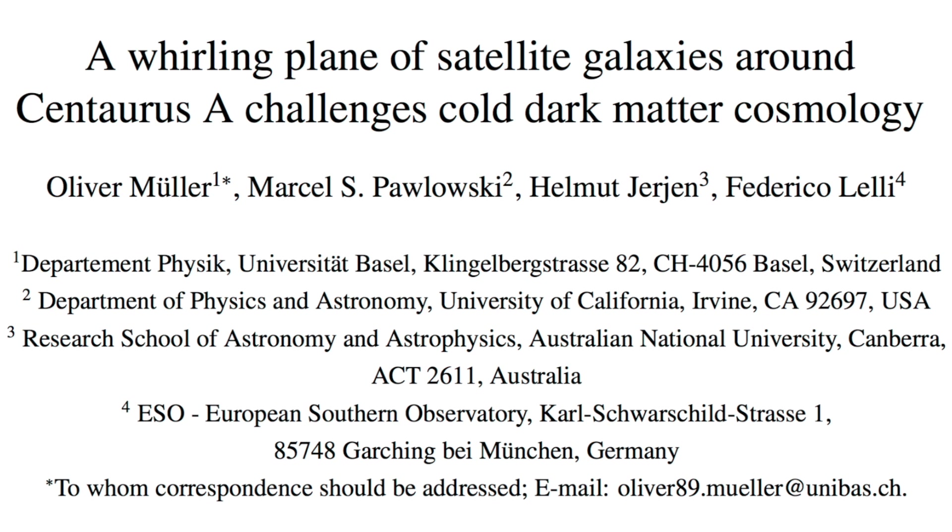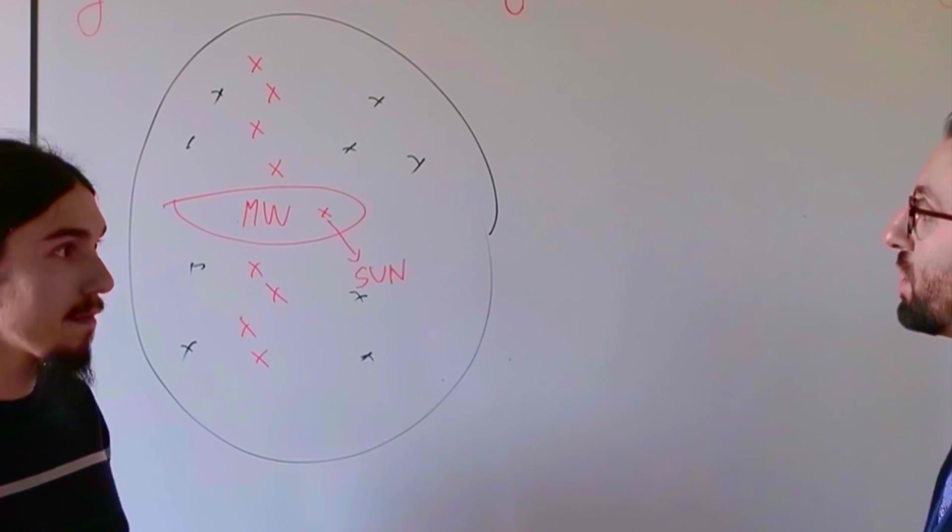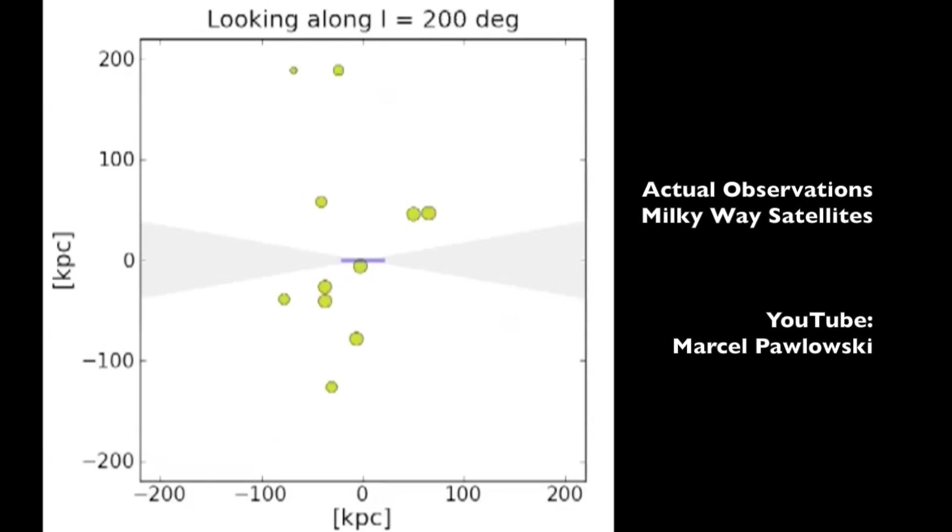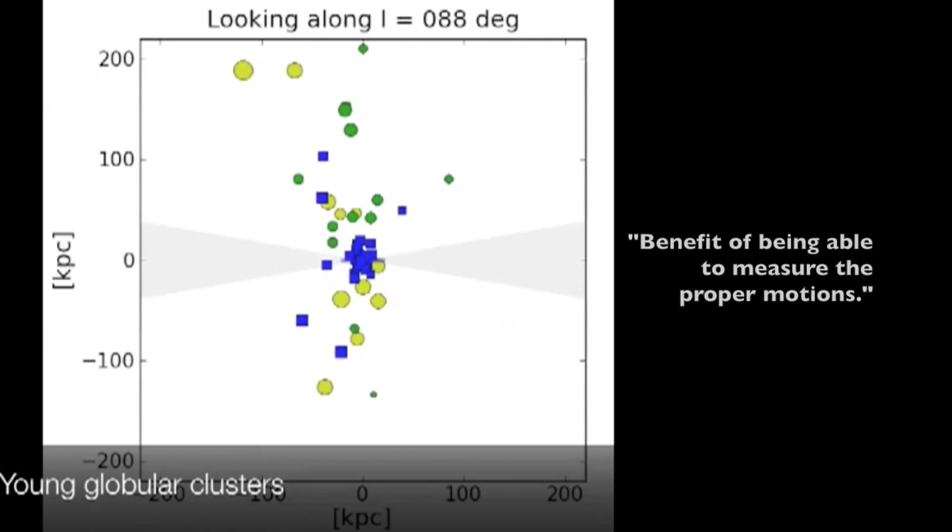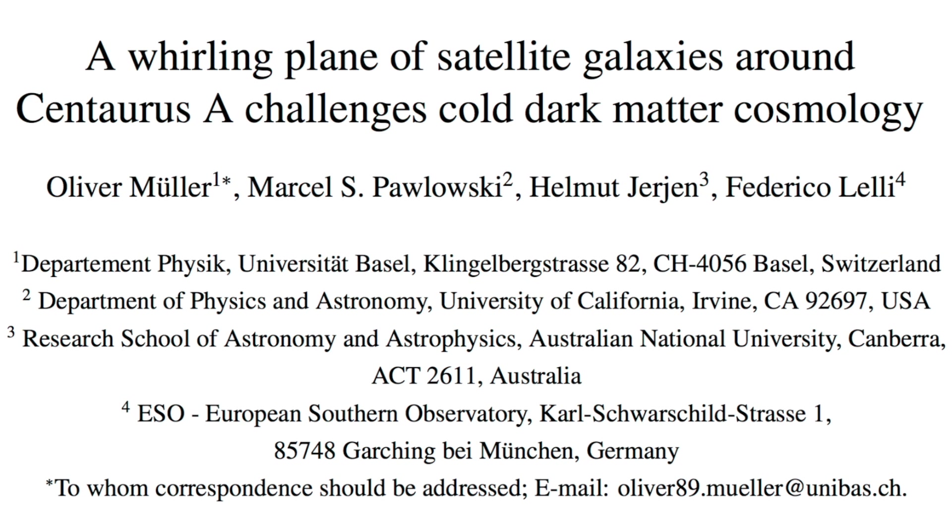This was motivated by earlier work on the Milky Way galaxy and its satellite galaxies, which are also distributed in what we call a vast polar structure—also a satellite plane. We have the benefit of being able to measure the proper motions, which means the tangential velocities on the sky. In that case, we can determine in which direction in three dimensions these galaxies move, and we see that they prefer to move along this plane.